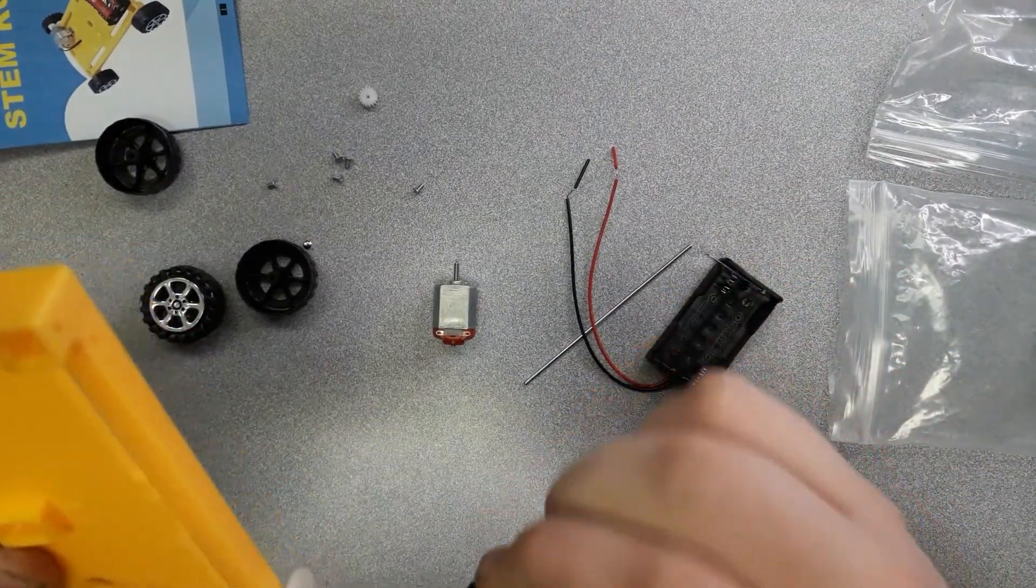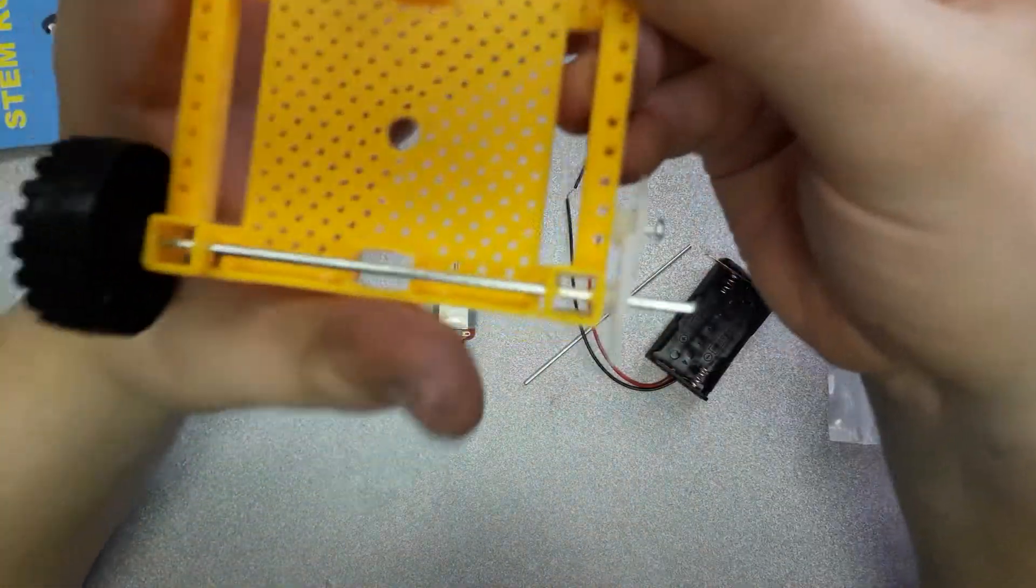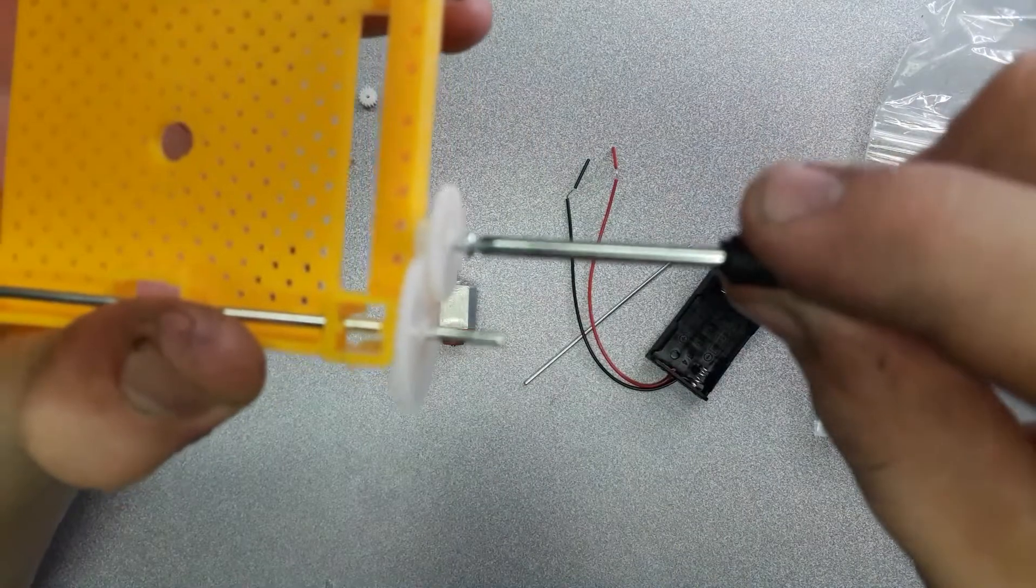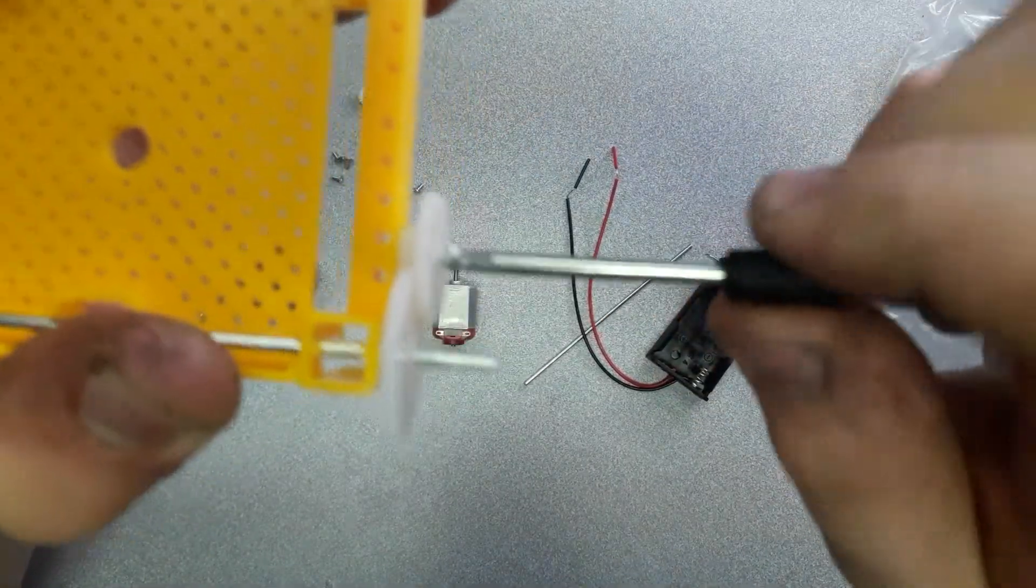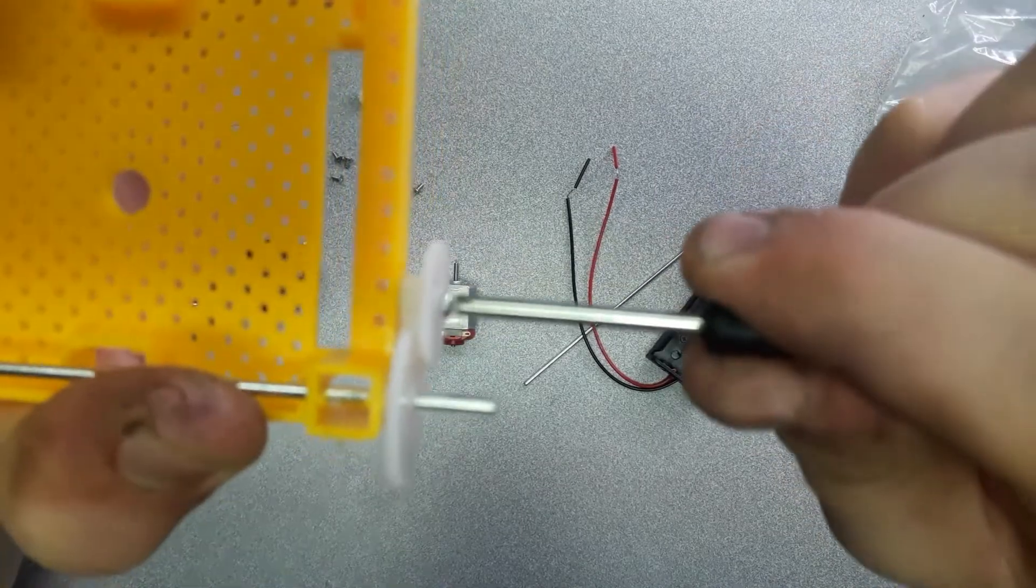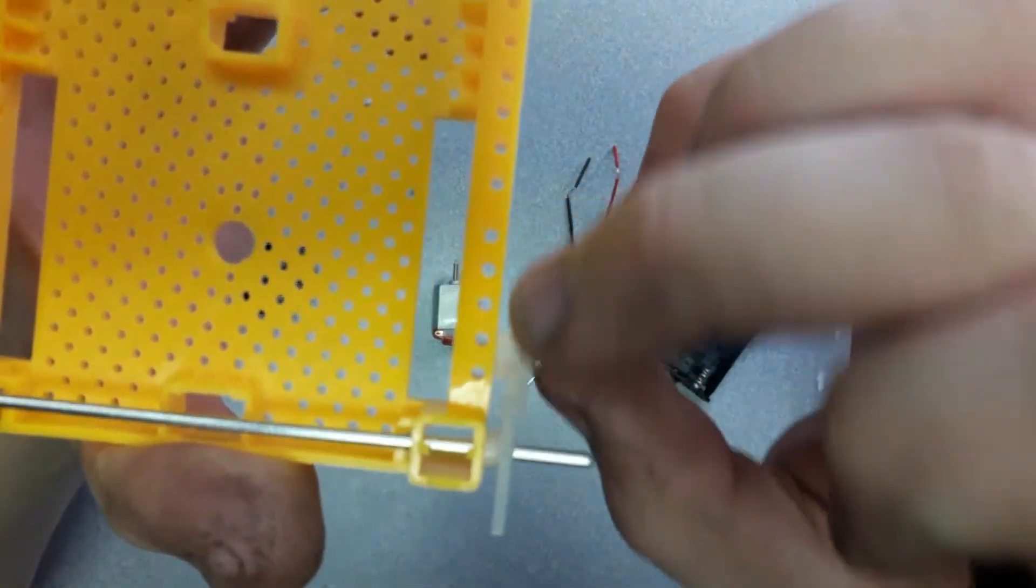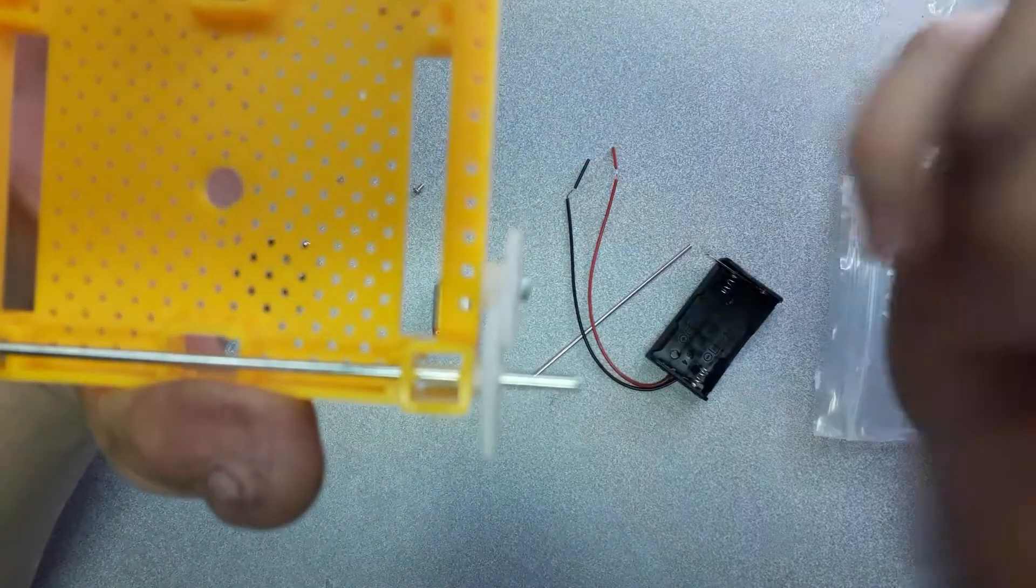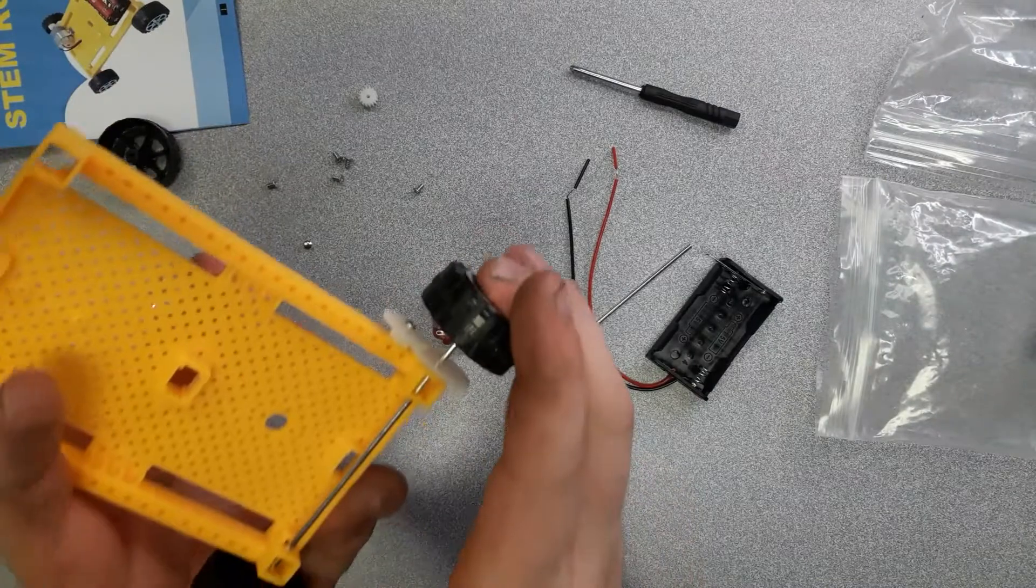And again don't do it too tight. Do it so there's just a little tiny bit of space left. I'll show you what I mean as I get it tightened down. So until about right there. So the gear has a little bit of movement. Everything can spin freely. Then you can put the other tire on there.